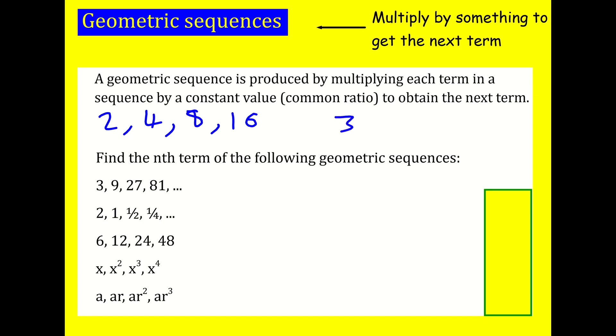Another example: we could start with 3 and multiply by 2 each time, giving 3, 6, 12. This would also be a geometric sequence.